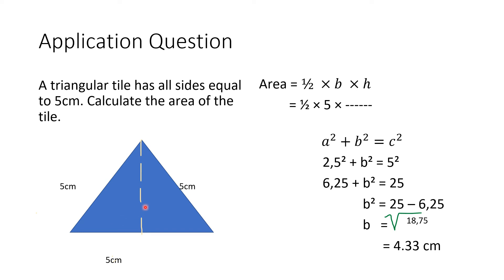I'm splitting this triangle into two halves. To apply the theorem I can use either half, so let's use this side. The 90 degree angle is right here, and opposite my 90 degree angle is my hypotenuse, which is 5 centimeters. From here to here is half of 5, which is 2.5, and my height is still unknown. So the square on the hypotenuse is equal to the sum of the squares on the other two sides: 5 squared equals H squared plus 2.5 squared.